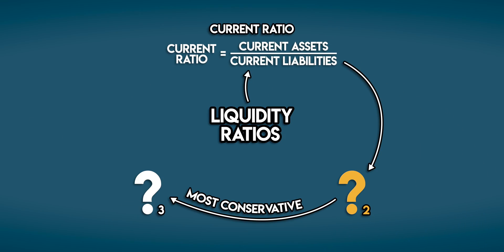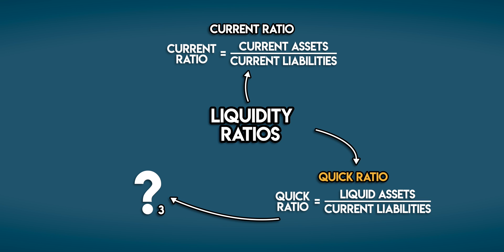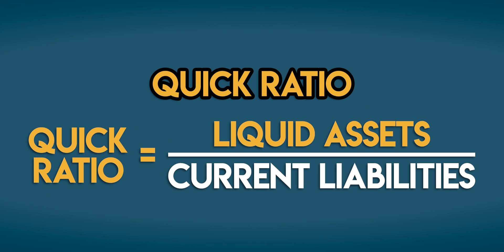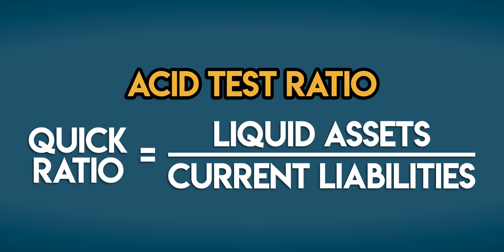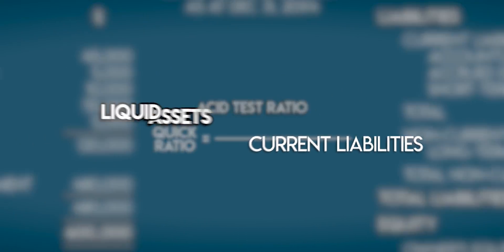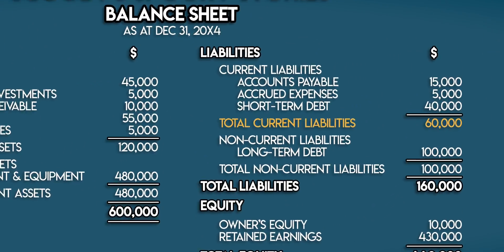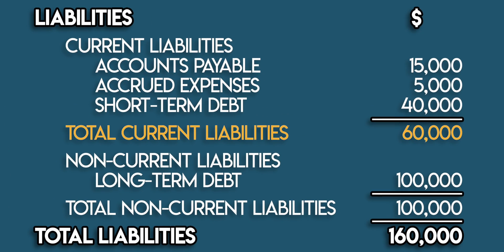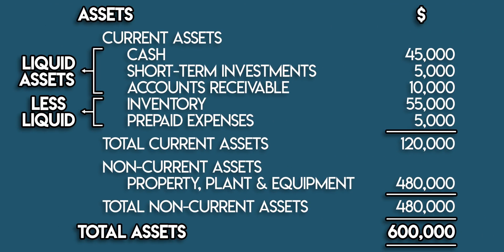Let's rein in our risk and have another look using the quick ratio. We can work out the quick ratio by dividing liquid assets by current liabilities. Another name for this is the acid test ratio — the name comes from the acid test used to check if gold is real. Current liabilities remain the same at $60,000, but now we need to find our bookstore's liquid assets, made up of cash, marketable securities, and accounts receivable. The quick ratio ignores inventory and prepaid expenses.